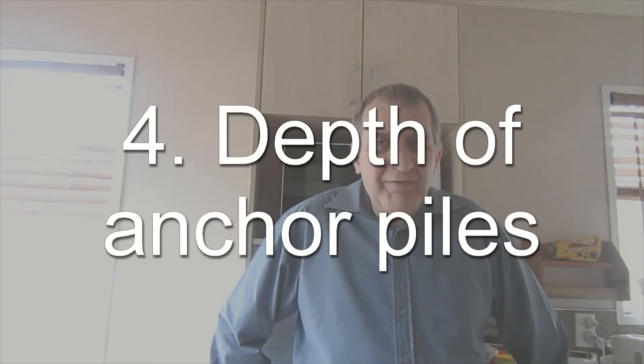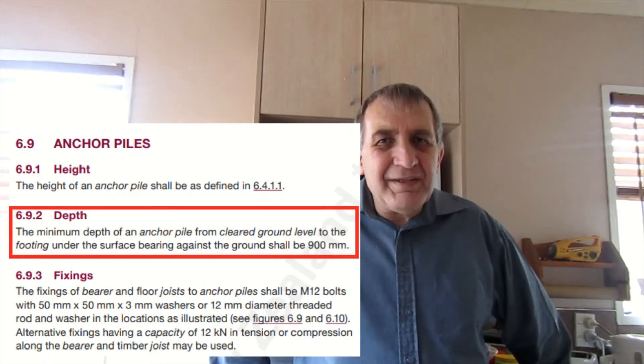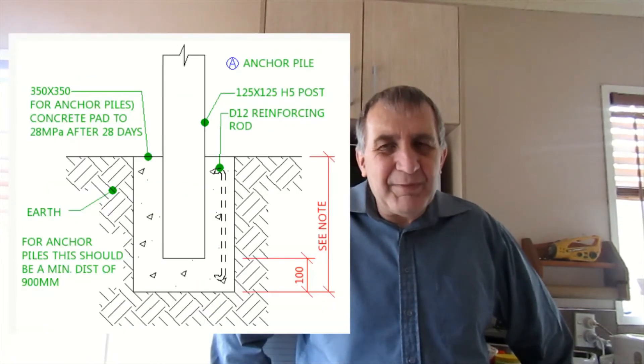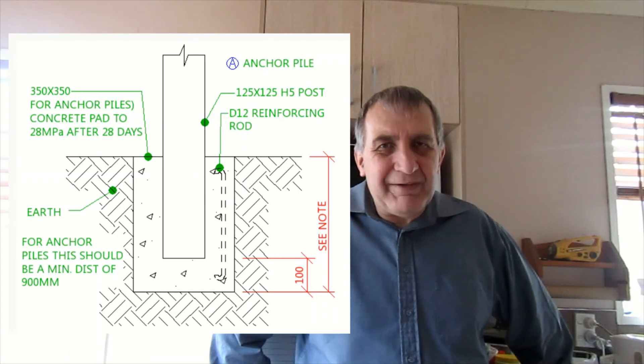The depth of a pole is actually determined under clause 6.9.2. This should be a minimum of 900 millimeters below the clear ground level.